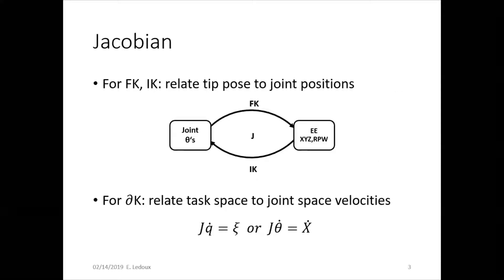The Jacobian is what we can use for forward and inverse kinematics to relate the tip pose to the joint positions. For derivative kinematics, it relates task space to joint space velocities.